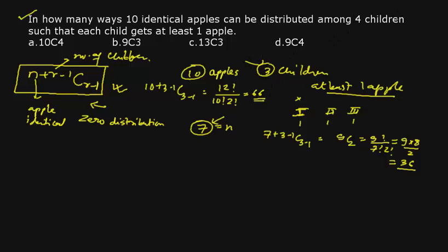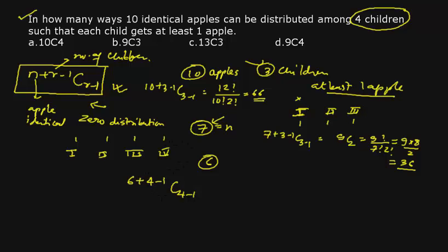Now solving the original question with four children: first manage the minimum condition by giving one apple to each of the four children, leaving 6 apples to distribute freely. Applying the formula with n = 6 and r = 4: (6+4−1) C (4−1) = 9C3. Calculating 9C3 = 9! / (6! · 3!) = (9 × 8 × 7) / (3 × 2 × 1) = 84. So the answer is 84, which corresponds to the second option among the given choices.